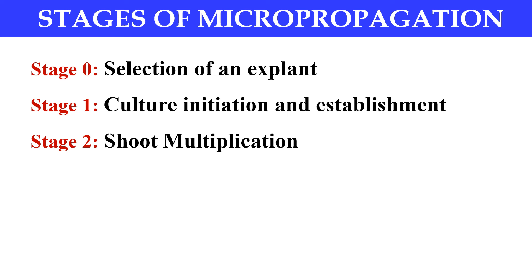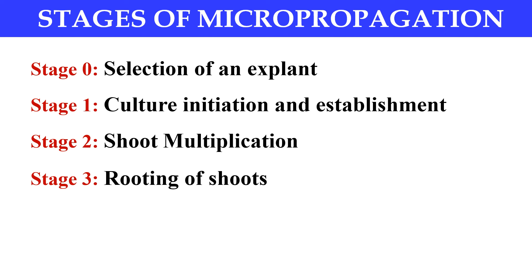The next stage is Stage 2, which is shoot multiplication. In this stage, we place our explant into the shooting medium in which shoots are regenerated from the explant. That is why it is called shoot multiplication, because shoots are multiplying in this stage. Next, Stage 3 is the rooting of shoots. In this stage, we place our explant with shoots into the rooting medium, and the roots will be developed from the explant.